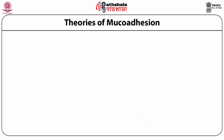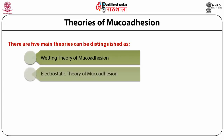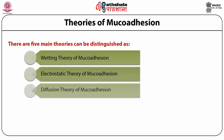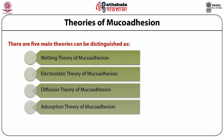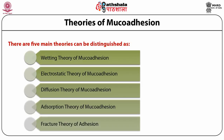To better understand the process of mucoadhesion and its use in mucoadhesive drug delivery systems, scientists including Jimenez-Costellanos and Andrews et al. proposed various theories over the decades. The five main theories associated with mucoadhesion are: the wetting theory, the electrostatic theory, the diffusion theory, the adsorption theory, and the fracture theory of mucoadhesion.